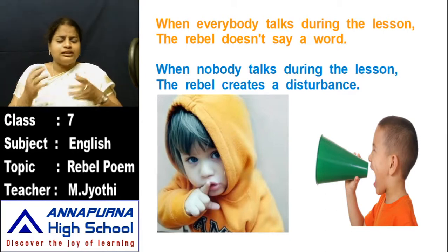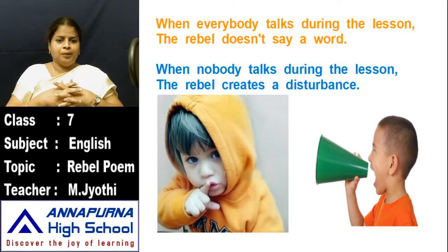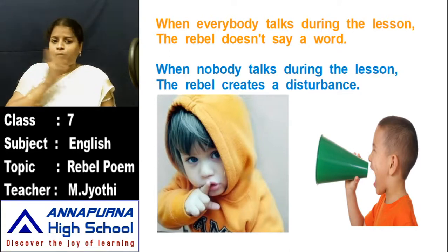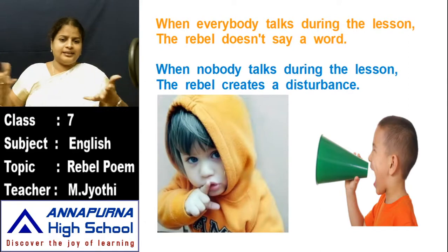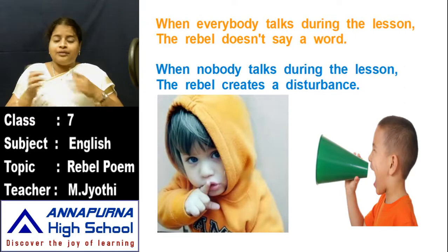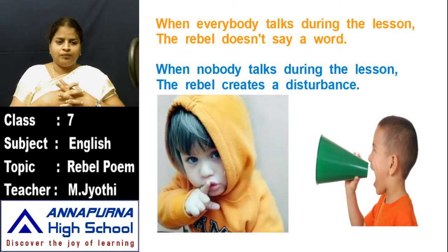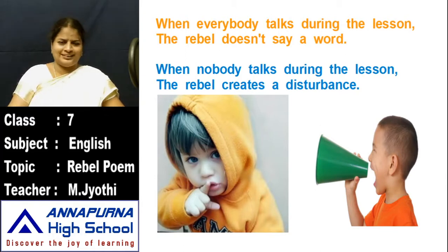When everybody has short hair, the rebel lets his hair long. When everybody has long hair, every child has long hair — the rebel only cuts his hair very short. Now the next four lines: When everybody talks during the lesson, the rebel doesn't say a word. If all the children are in the classroom and the teacher asks questions, everybody gives opinions — but the rebel is very quiet, doesn't say a word. When nobody talks during the lesson, the rebel creates a disturbance — like in the picture.